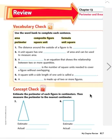Number 6, blank is made up of two or more figures. And this is a couple of pages ago in the chapter, this is where you had a rectangle sort of on top of another rectangle and you had to divide them up and then calculate the area and then add those two together. Those are called composite figures.